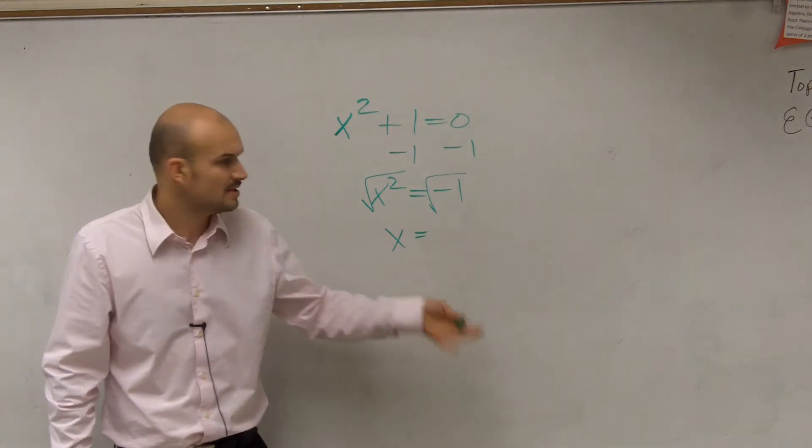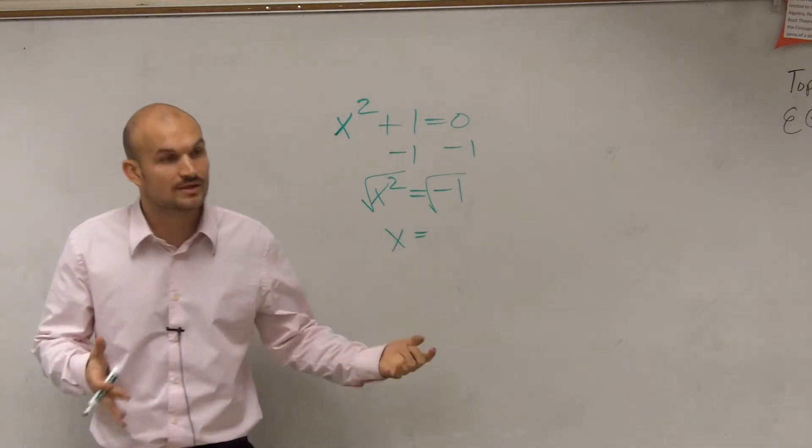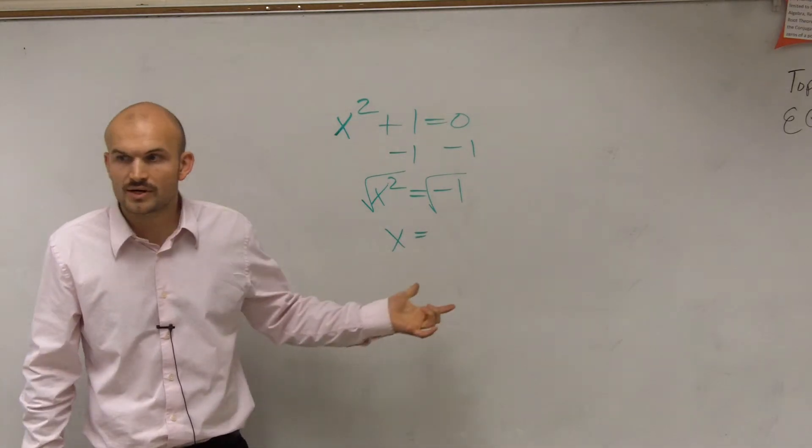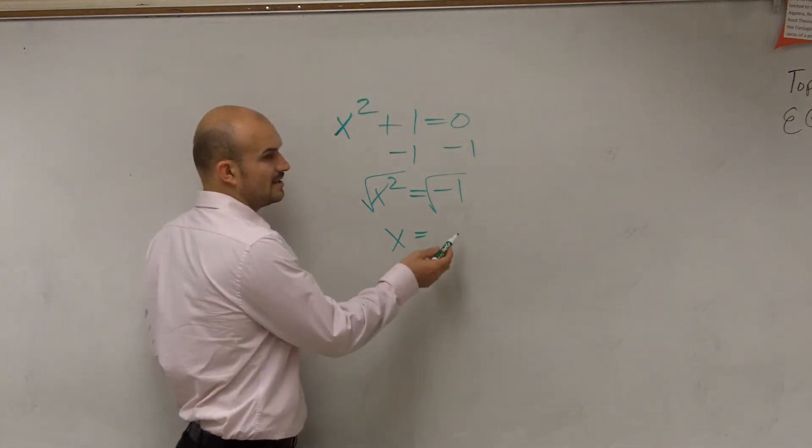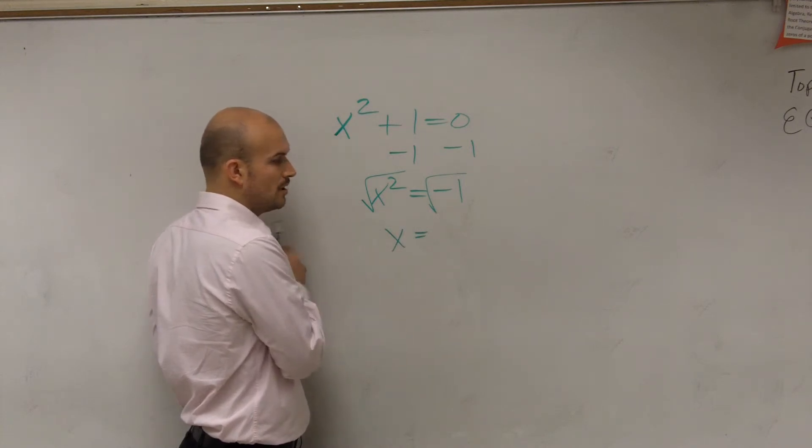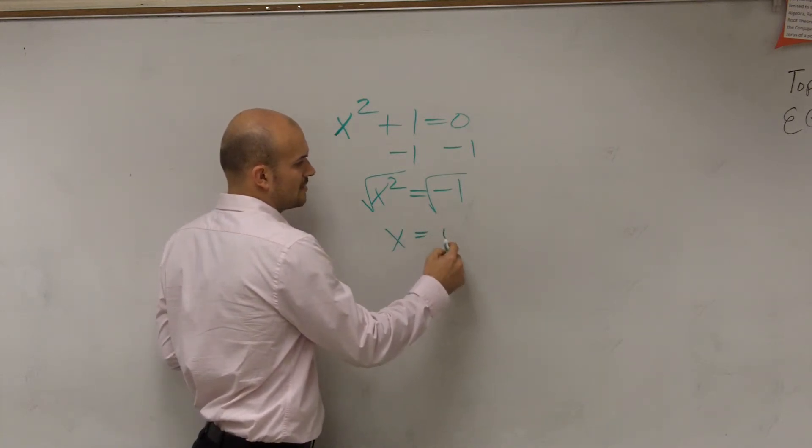But then the number wouldn't be the same. So is it possible in the real number system to take the square root of a negative number? No. It's not, right? So we're still going to write what we can write this as. The square root of negative 1 we write as i.